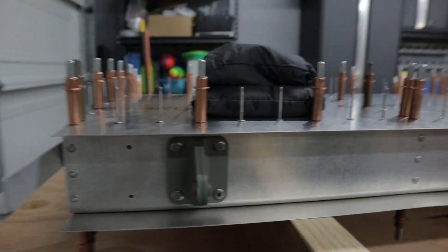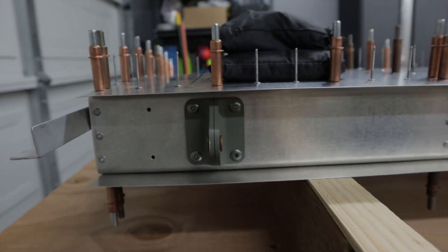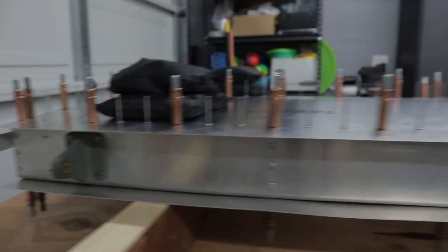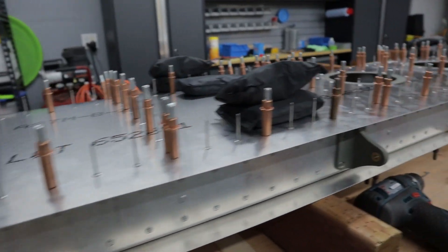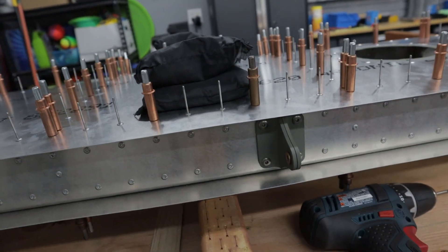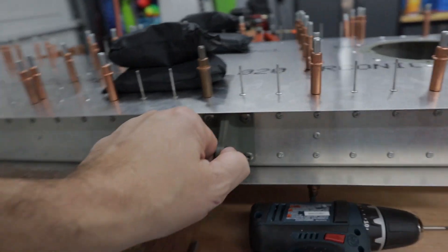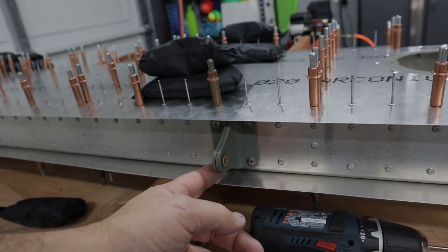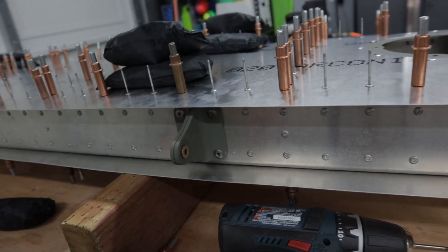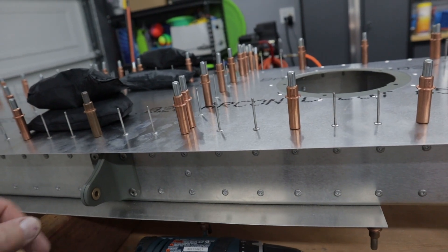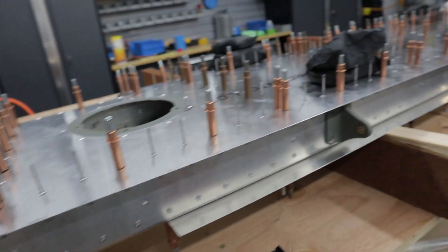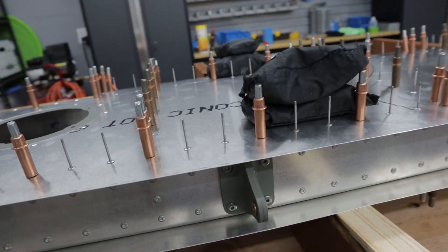Then I went ahead and riveted on the hinges to the spar. I did that before riveting the frame together, so it's a little bit easier to maneuver and manipulate. These are stainless steel rivets - you got to really hold onto the parts when you're squeezing those because it takes a little bit of force.